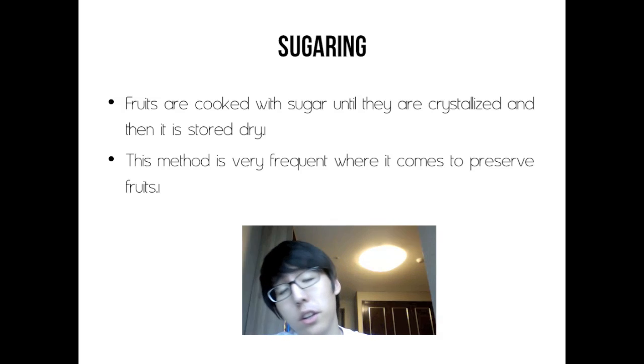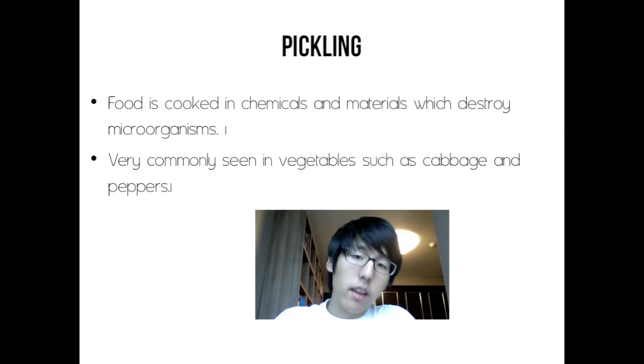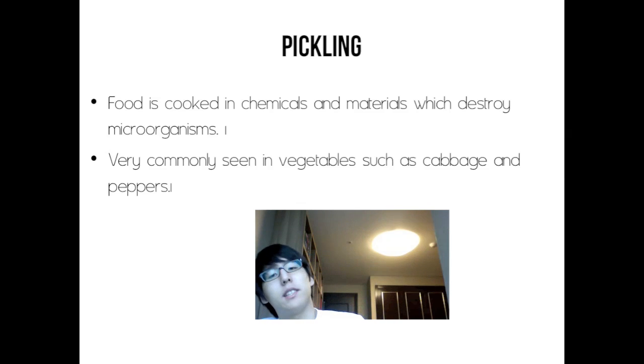Sugaring: fruits are cooked with sugar until they are crystallized and then stored dry. This method is very frequent when it comes to preserving foods. Pickling: food is cooked in chemicals and materials which destroy microorganisms. It's very commonly seen in vegetables such as cabbage and peppers. That was a quick lesson about food preserving and processing methods, and that is it for my podcast.